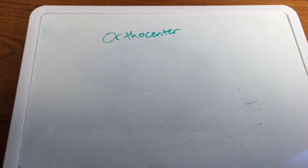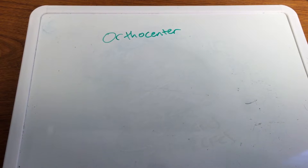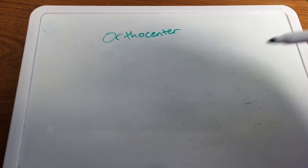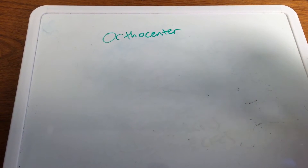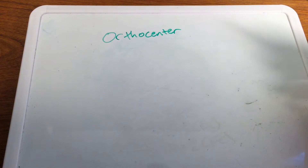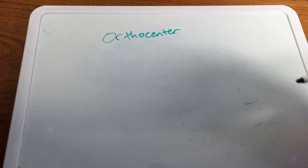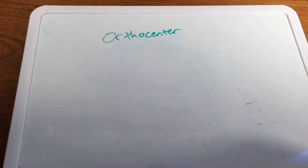The orthocenter of a triangle. Now the orthocenter, out of the four different ones — the centroid, circumcenter, and incenter — is in my opinion the toughest one to learn, to do, to create.